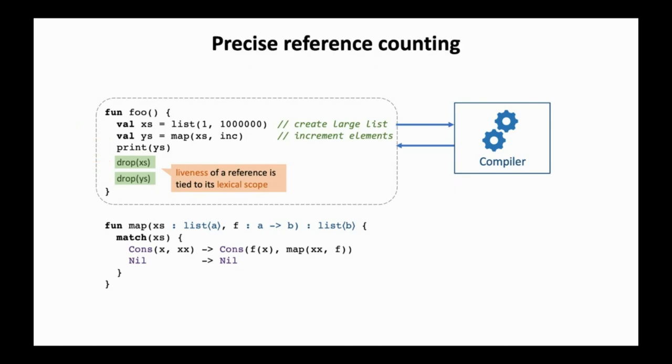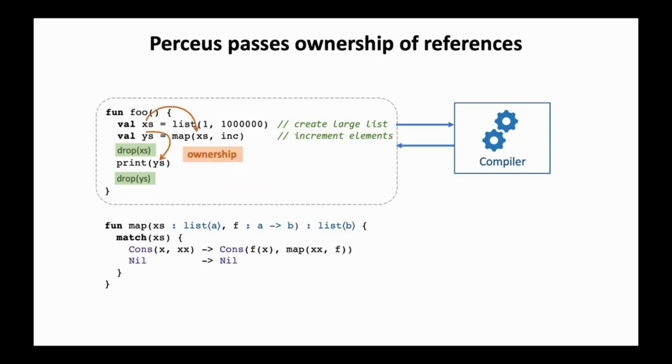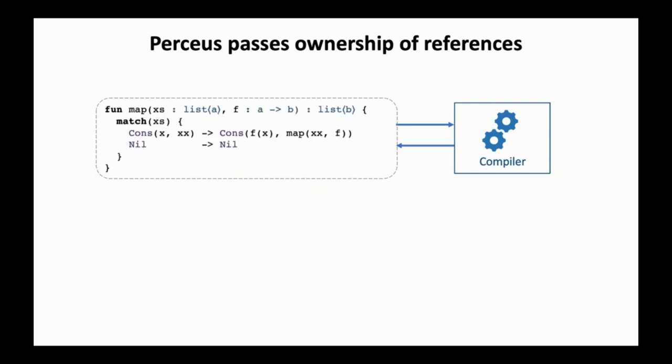For reference counting to be precise, we want to drop resources as soon as possible. Now, before printing YS, XS will have been dropped. Perceus takes a more aggressive approach, where ownership of references is passed down to each function. Now, no drop operations are emitted in site four, as map is in charge of freeing XS and YS is freed by print. Now, let's take a look at how Perceus will transform this map function then.